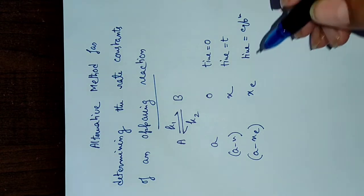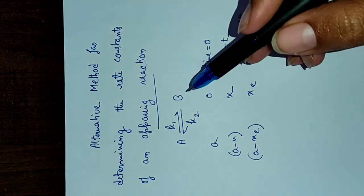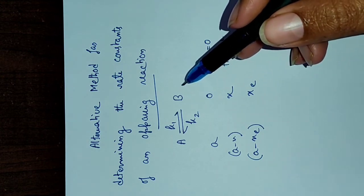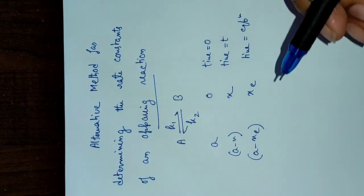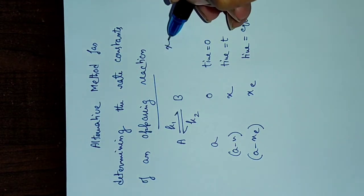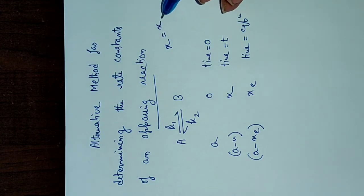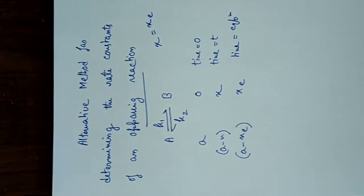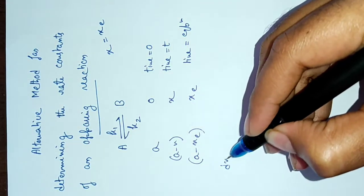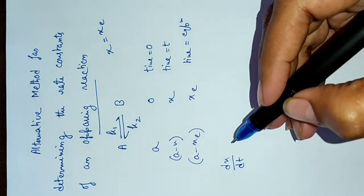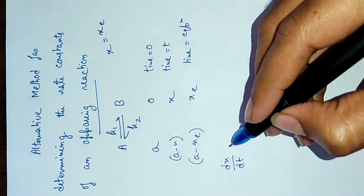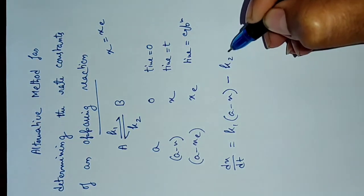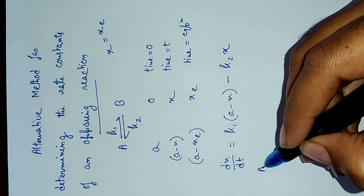After attainment of equilibrium, the rate at which B appears equals the rate at which B disappears, so there is no net change in concentration of B. At equilibrium, x is constant and is referred to as x_e. The rate of formation of product is dx/dt = k1(a - x) - k2·x.